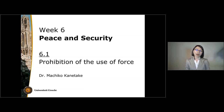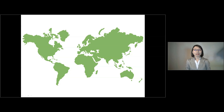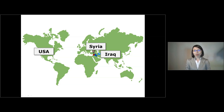I'd like to begin the lecture with a specific story. In September 2014, the United States, together with its allied forces, began airstrikes against the Islamic State, known as ISIS — not only in Iraq, which gave authorization to the United States, but also in Syria. And not surprisingly, not only the Syrian government but also the Russian administration criticized the US-led airstrikes as a violation of international law.